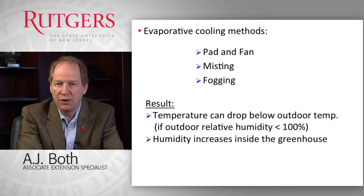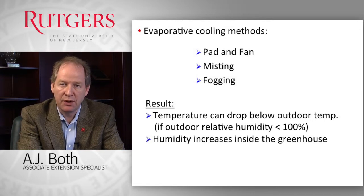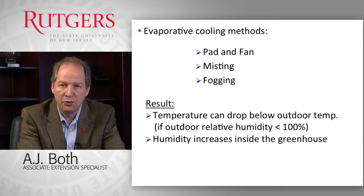There are several ways that we can use evaporative cooling in greenhouse applications. The first one is the pad and fan system, followed by misting and fogging. By evaporative cooling we drop the outdoor temperature as it comes into the greenhouse — that is, if the outdoor temperature or the incoming air is not already saturated, because if it is already saturated we can no longer evaporate more moisture into it. By doing this process of evaporation we increase the overall humidity inside the greenhouse, so this could be an issue depending on what strategy you want to use to grow your crops.